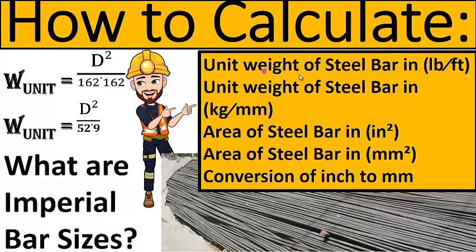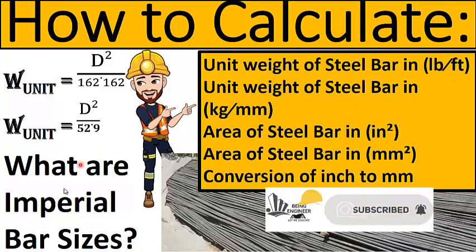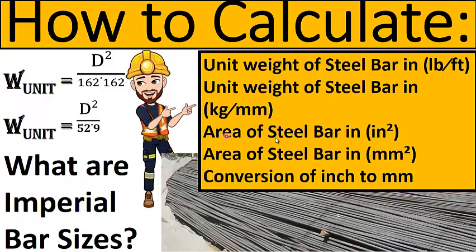In this video we are going to calculate the unit weight of a steel bar in lbs per feet, and how to convert it into kg per meter. Imperial bar sizes are available either in inches, represented by a hash sign, or in millimeters — using either the FPS or MKS system. We will also calculate the area of steel in square inches and square millimeters, using two formulas for unit weight.